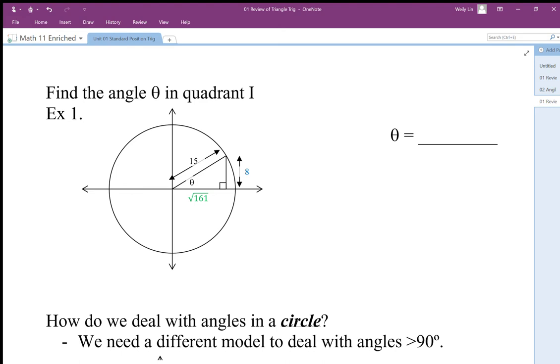Here we have our right triangle in quadrant one and we want to work out the angle theta. This is our right triangle with the angle, opposite being 8, adjacent being square root 161, and hypotenuse 15.